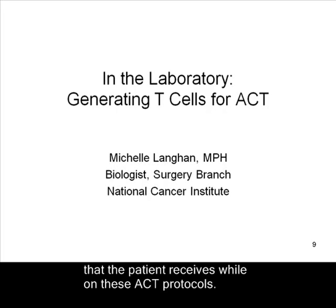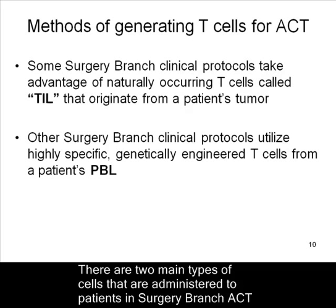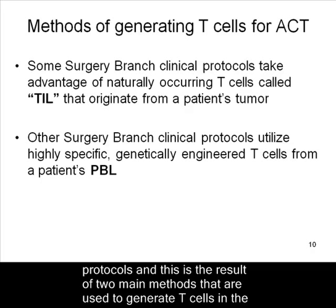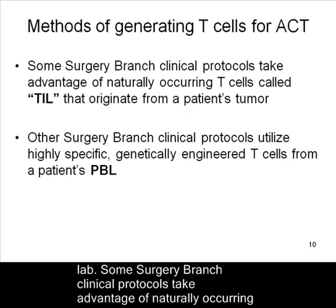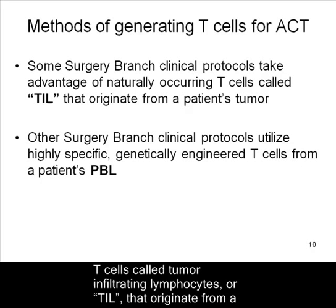There are two main types of cells that are administered to patients in surgery branch ACT protocols, and this is the result of two main methods that are used to generate T cells in the lab. Some surgery branch clinical protocols take advantage of naturally occurring T cells, called tumor infiltrating lymphocytes, or TIL, that originate from a patient's tumor.